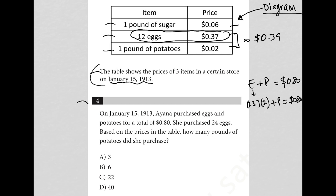$0.37 times 2 is going to be $0.74. So 74 cents plus whatever the cost of potatoes are is equal to my 80 cents. And of course I can subtract this